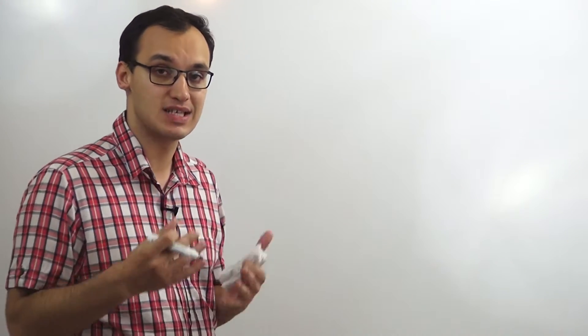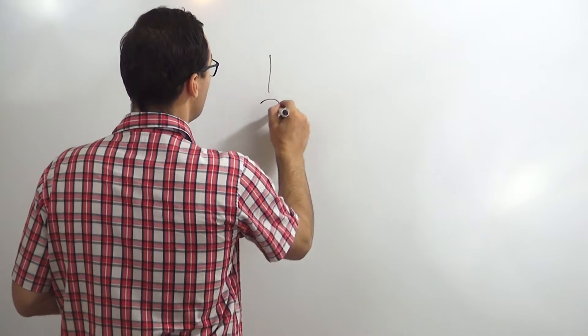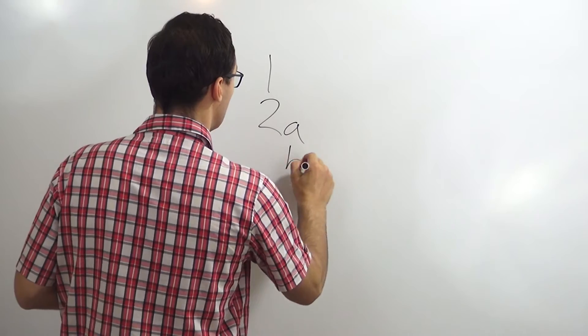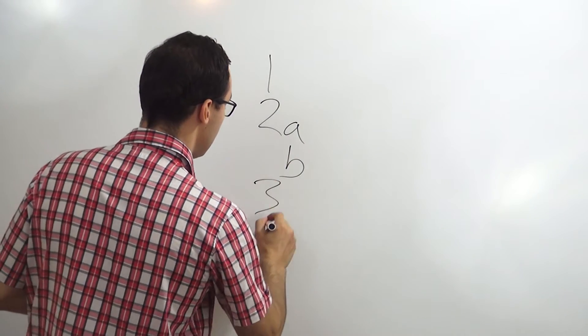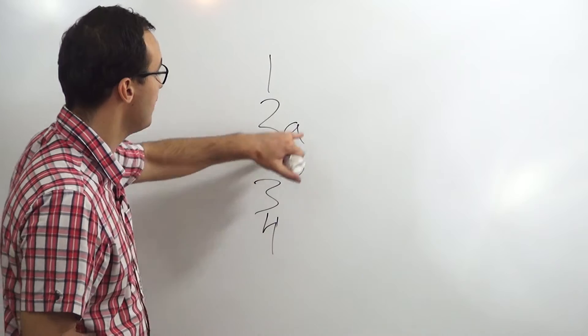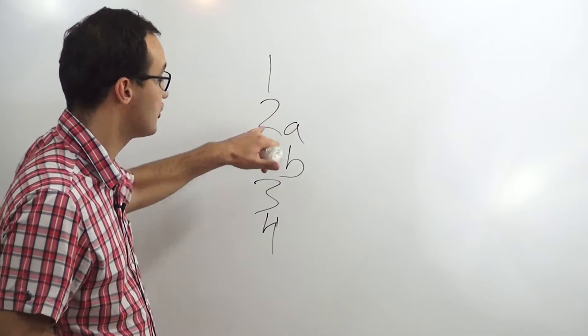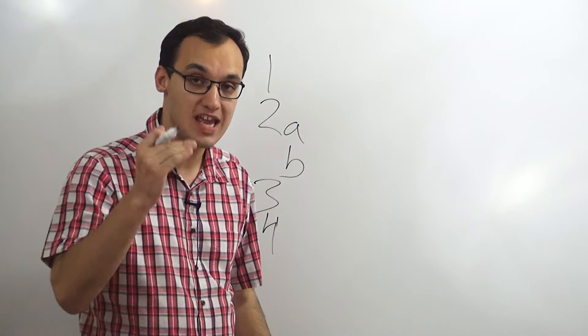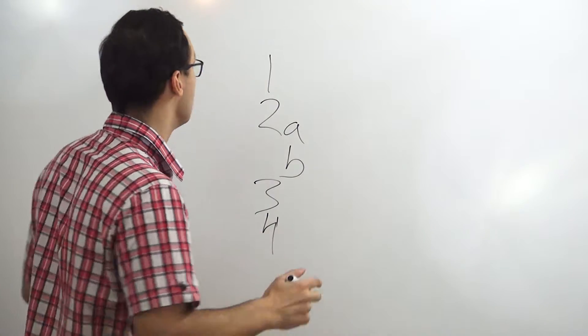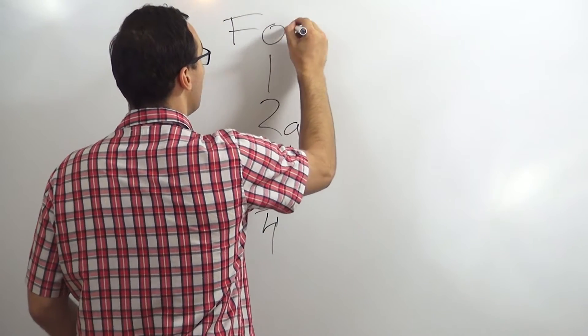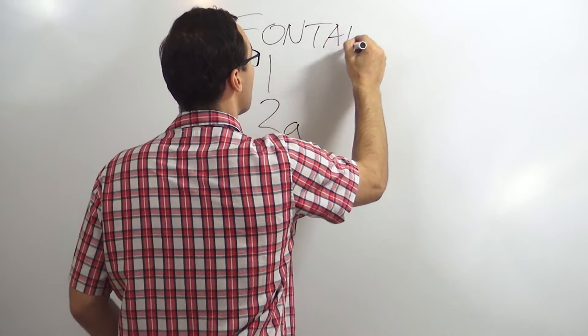Therefore, we need to classify each patient into different groups, and the Fontaine classification discusses five types. We have one, two, two a, two b, then we have three, four. These are five groups because the second has a and b subdivisions, and we call this Fontaine classification.